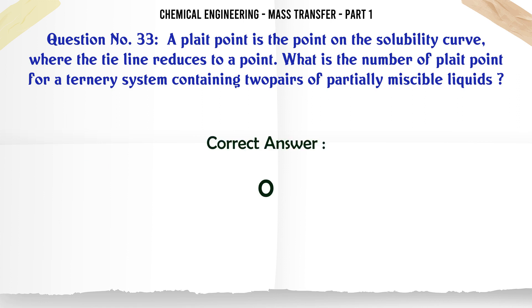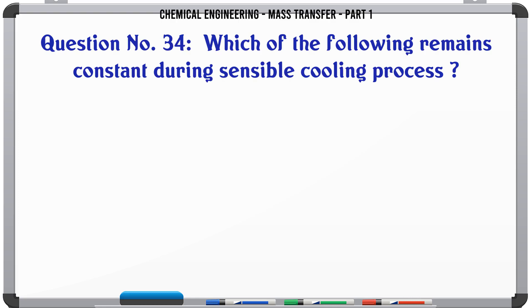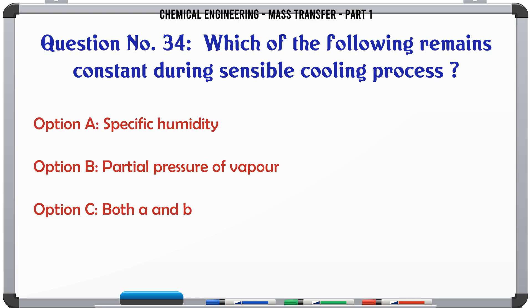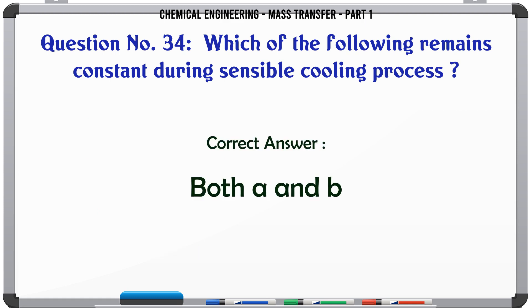Which of the following remains constant during sensible cooling process? A. Specific humidity. B. Partial pressure of vapor. C. Both A and B. D. Neither A nor B. The correct answer is Both A and B.